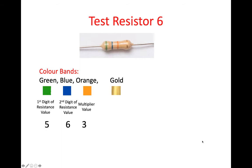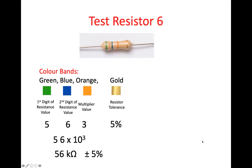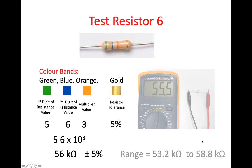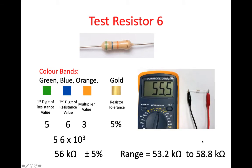And again, gold is plus or minus 5%. So that gives you 56 multiplied by 10 to the power of 3, plus or minus 5%, which is 56K ohms. As a range, that would go from 53.2K ohms to 58.8K ohms. And we measured this at 55.5K ohms, so it's within the range.